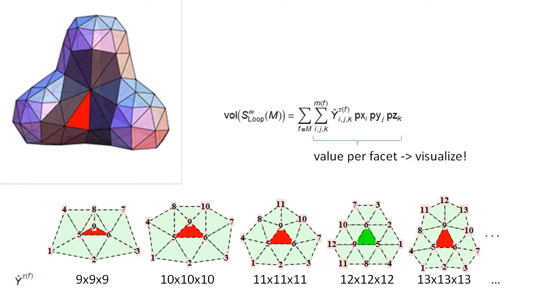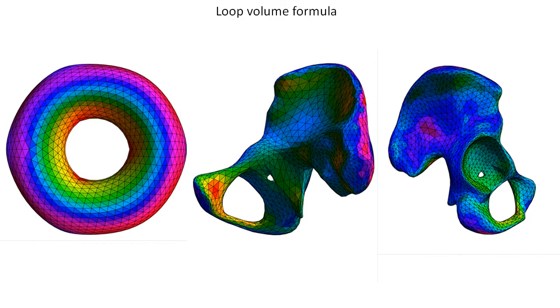The formula is a sum over the volume contribution of each triangle. We visualize these values by coloring the triangles in the mesh based on their contribution to the global volume. These are three example meshes. The values aren't too different from the determinant formula.